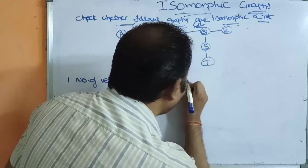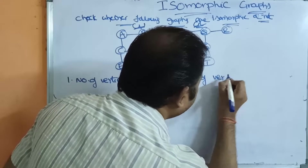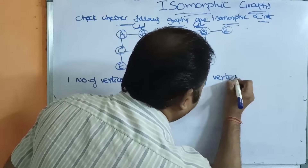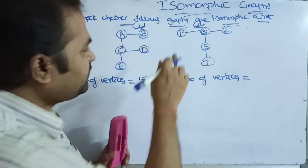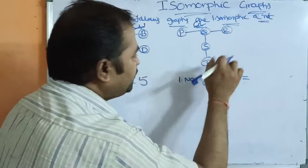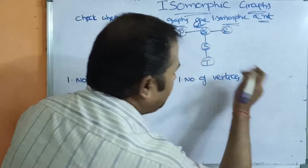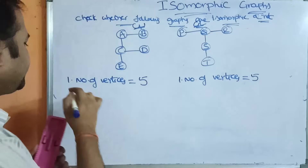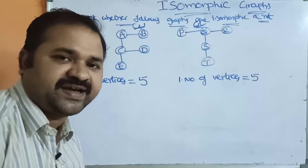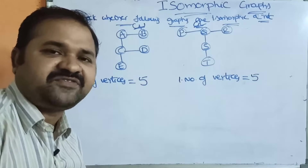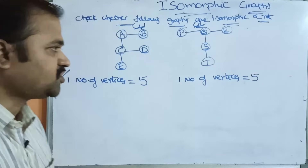Likewise, let us find out the number of vertices of the second graph. Graph two also has five vertices. So we can say that the first condition is satisfied. We need to satisfy the remaining five conditions as well.